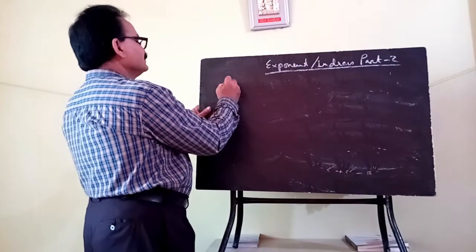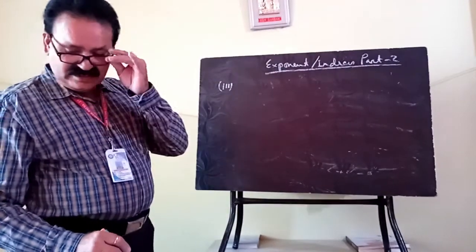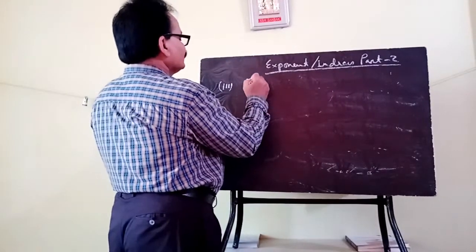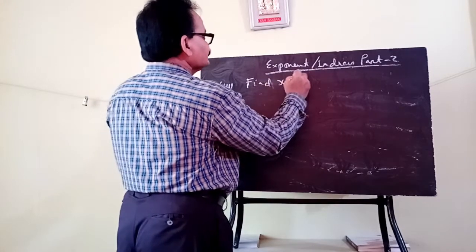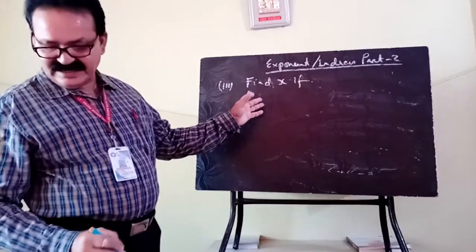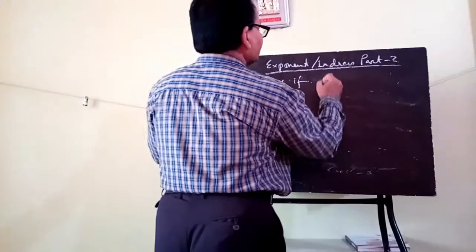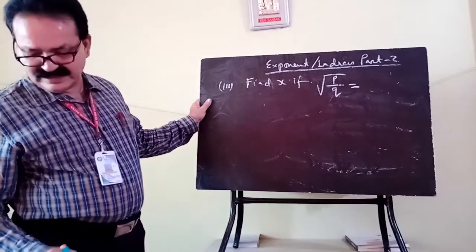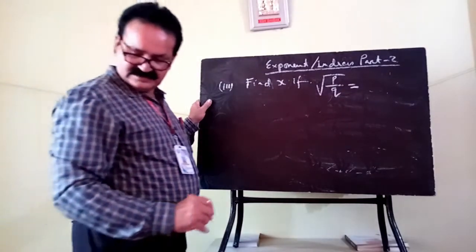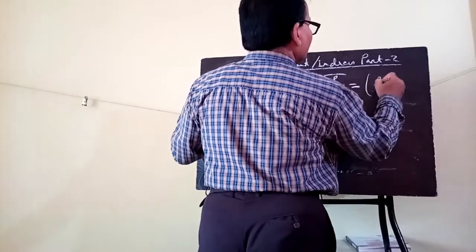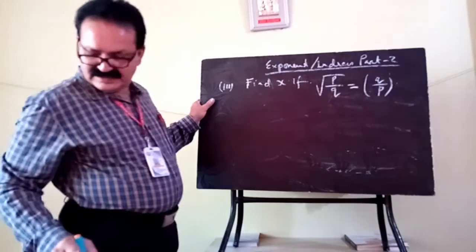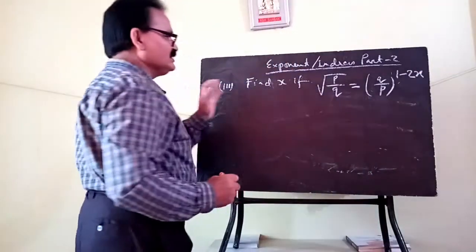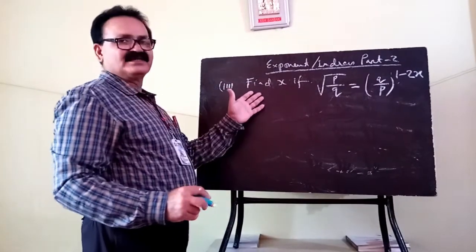Third question: find the value of x, given that the square root of p by q equals q by p to the power 1 minus 2x. After solving this you have to find x.